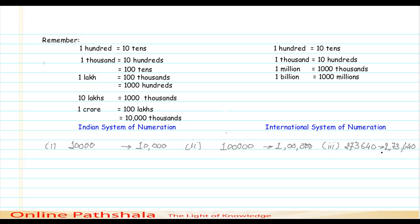In the Indian system of numeration, the first comma comes after three digits from the right, then subsequent commas come after every two digits. Following this rule, a number like one followed by seven digits would be one crore.